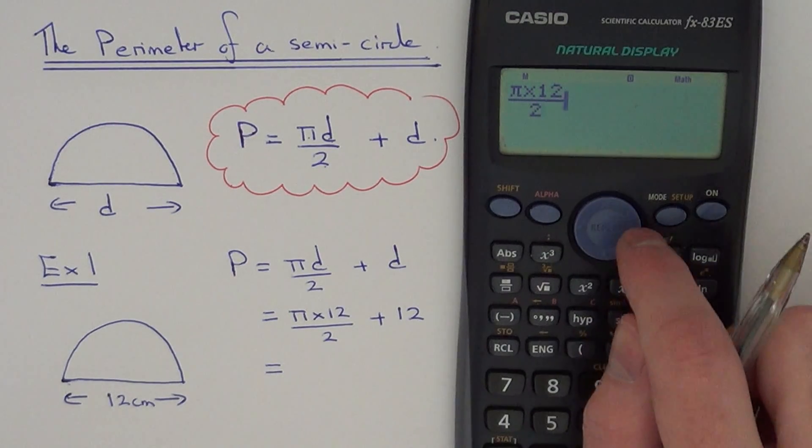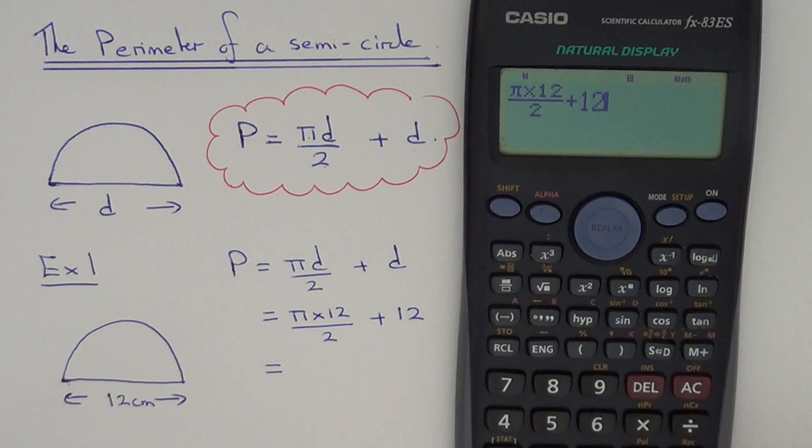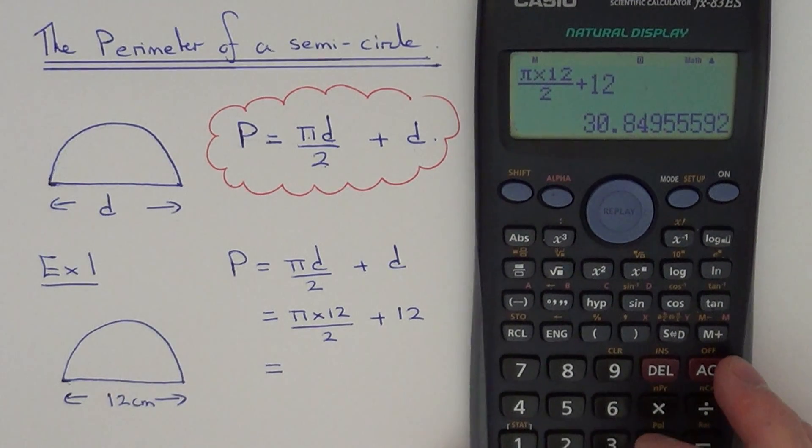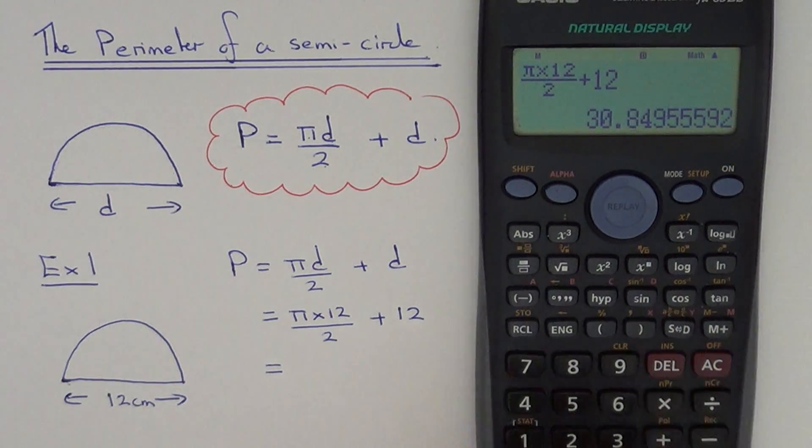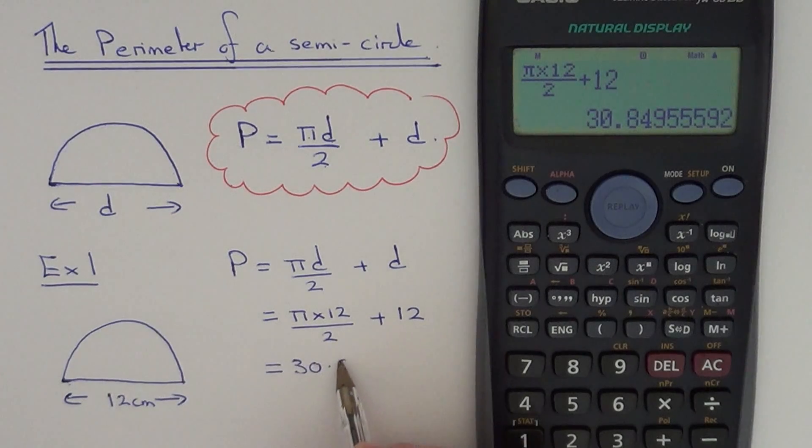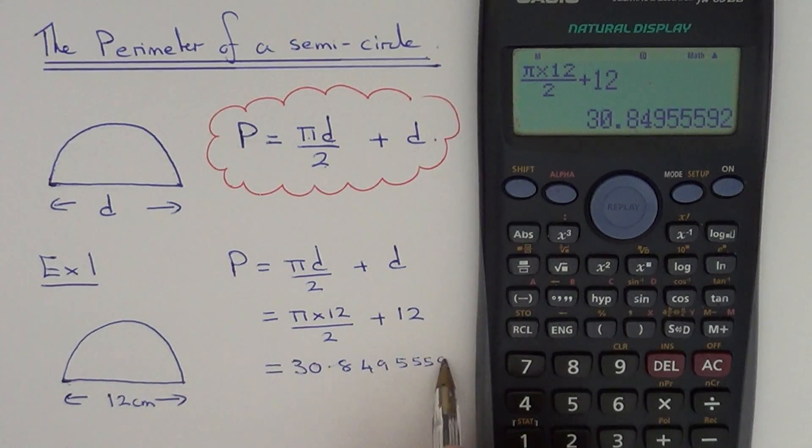...over 2, plus 12, hit your equals. So that gives us an answer of 30.8495592.